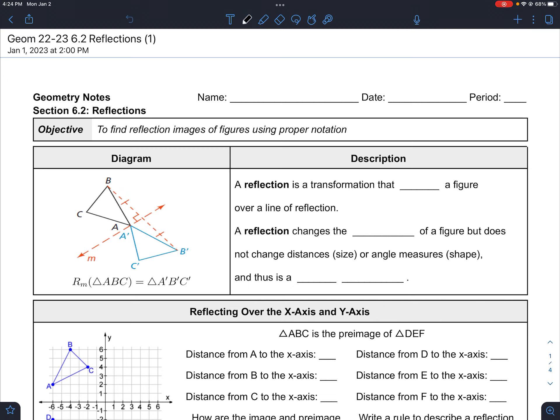It doesn't change the shape or size because the reflection we know, if we look at our reflection in the mirror, it doesn't get any bigger, right? It kind of stays the same size. So it's a transformation that flips a figure over a line of reflection. We can see that happening here. We have this triangle, and it's being flipped over this dotted line right here.